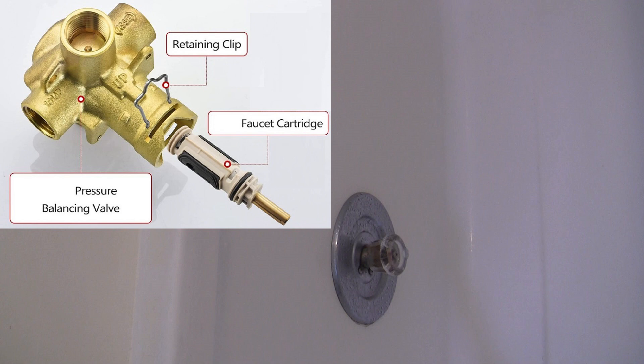These cartridges are meant to be replaced when they begin to leak, and to fix a leaking shower head, replace the old cartridge with an identical new one.